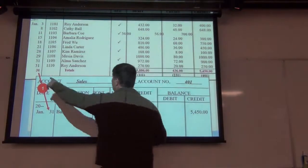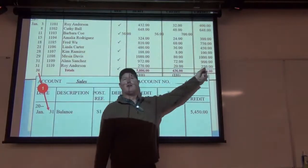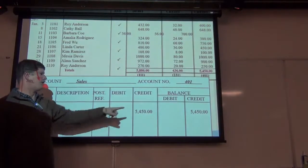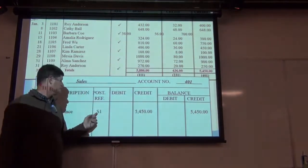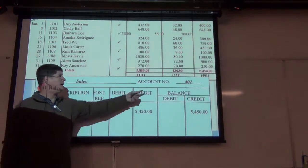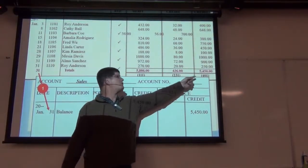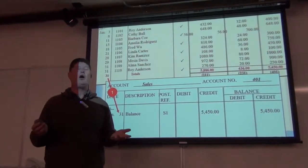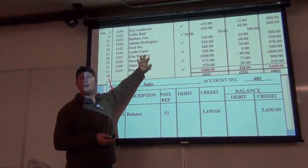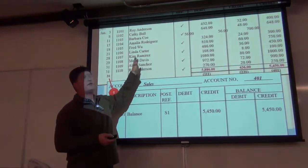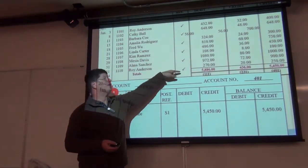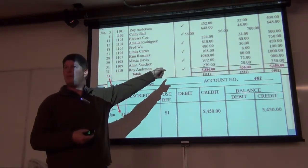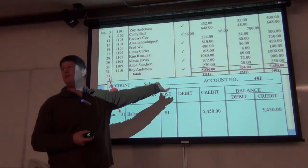Then we post to sales. On the 31st, we pull the amount from sales—remember, sales is a credit, so we post it as a credit, calculate the new balance. It comes from the sales journal, S1. Our posting reference is the account number for sales, 401. All of your special journals look slightly different—the columns will have different headers—but they behave the same. So as we do chapter 8, they behave the same, which will make it a little easier.